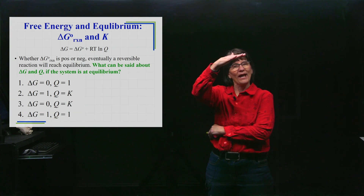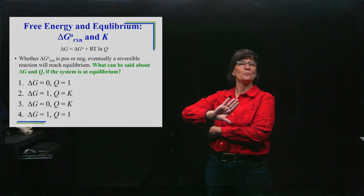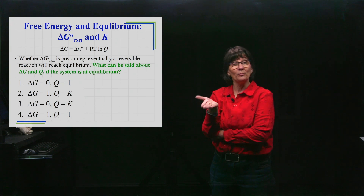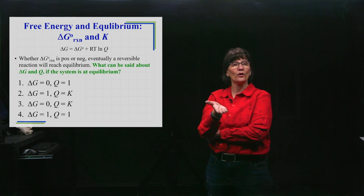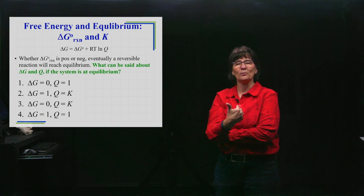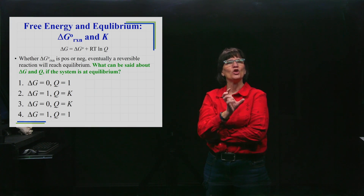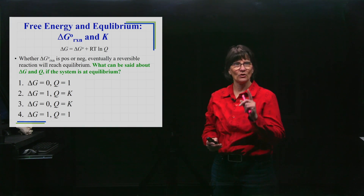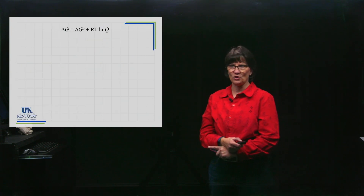And that reaction quotient — products over reactants raised to the power of their coefficients — once you reach equilibrium, that expression equals the equilibrium constant. So at the point of equilibrium, Q becomes K. Let's keep those two things in mind and derive a new equation.